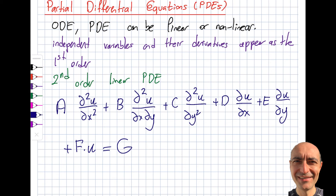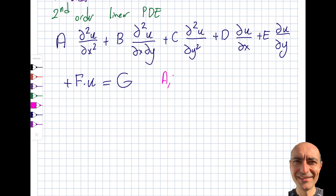Looking at this form, the independent variables are x and y, and the dependent variable is u. I take the second-order partial derivatives with respect to x, and also the mixed partial ∂²u/∂x∂y, along with first-order terms — similar to the ODE structure. The coefficients a, b, c, d, e, f, and g are either real constants or functions of x and y for the equation to be linear.